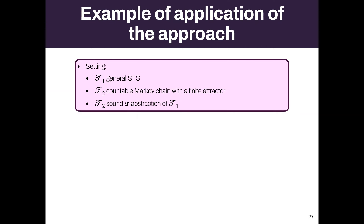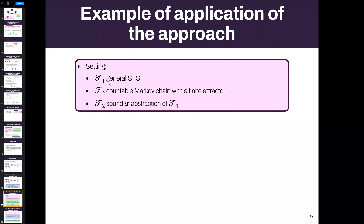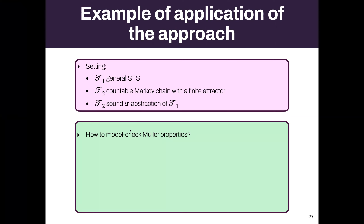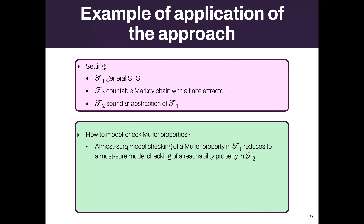How do we use this? Take your complex model T1 — continuous space, continuous integrals — and T2 which is simpler, like a countable or finite Markov chain with a finite attractor. Lossy channel systems have finite attractors; finite Markov chains also have finite attractors. If T2 is a sound abstraction of T1, then almost-sure model checking in T1 is equivalent to almost-sure model checking in T2, which is simpler to analyze.